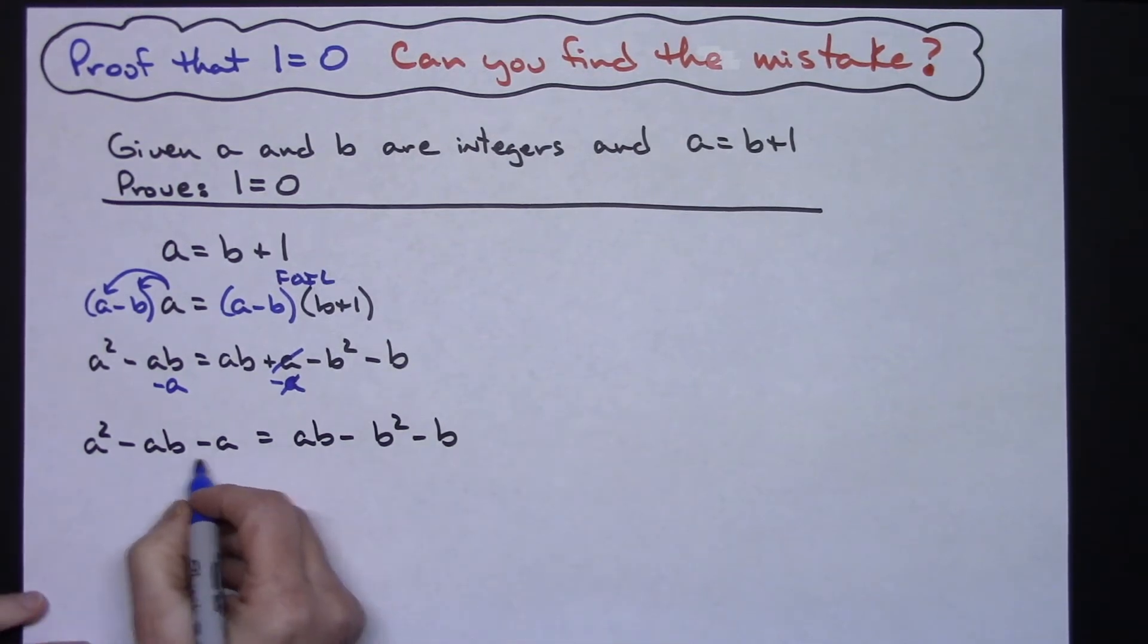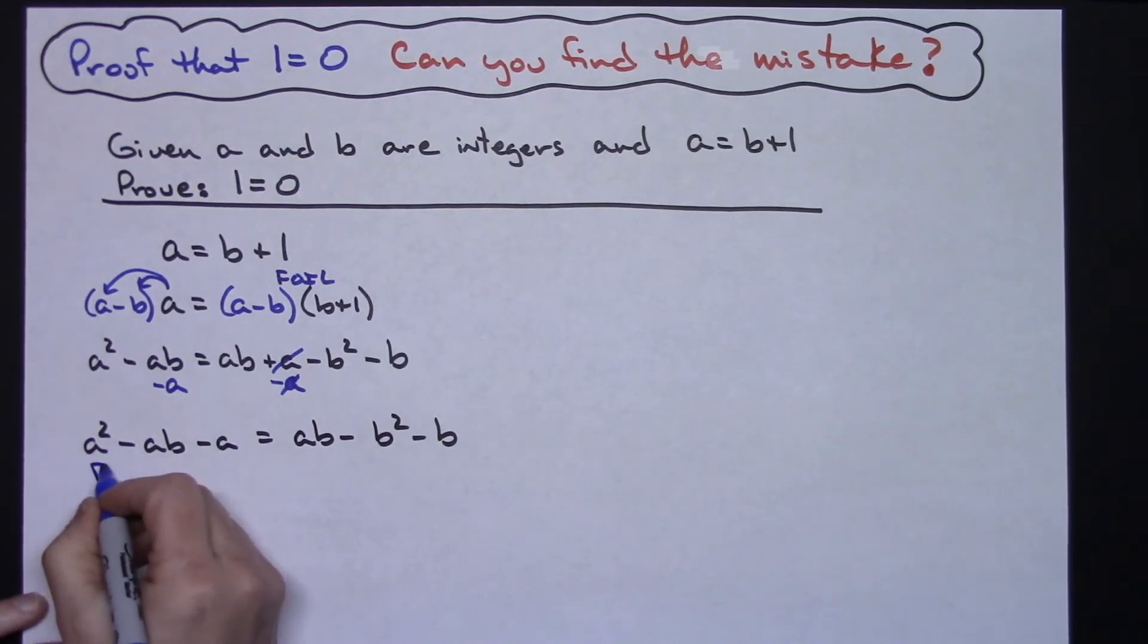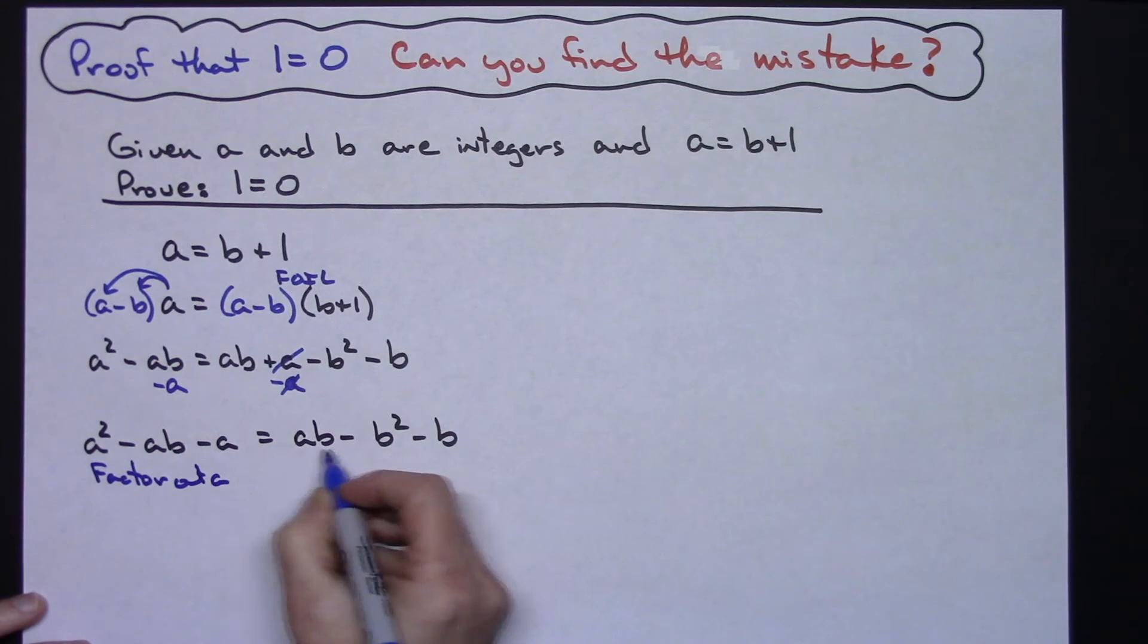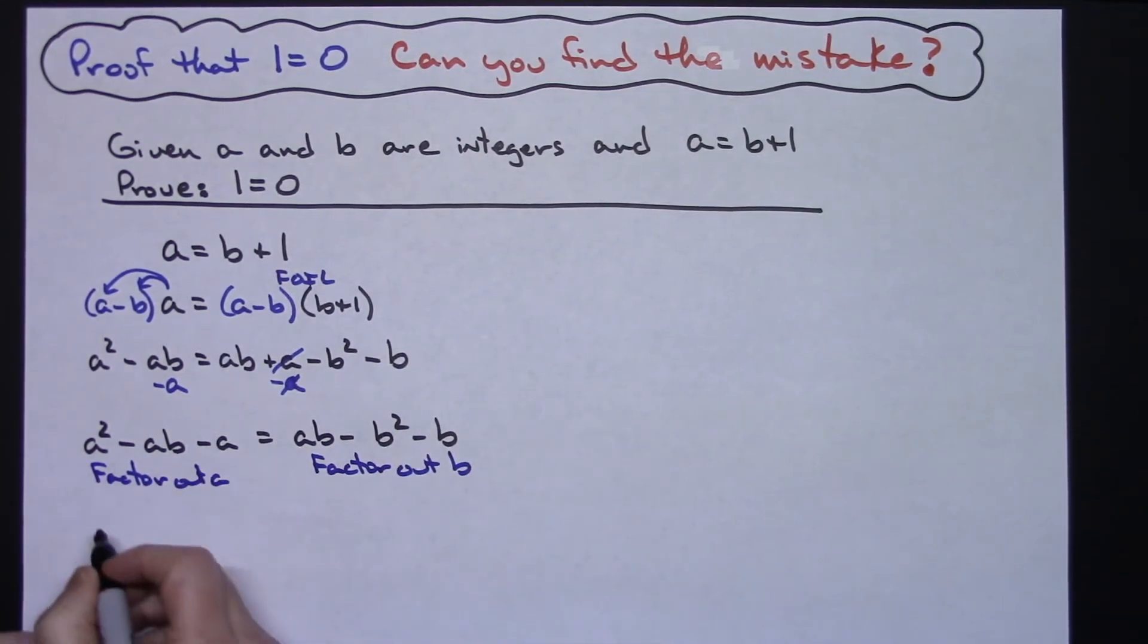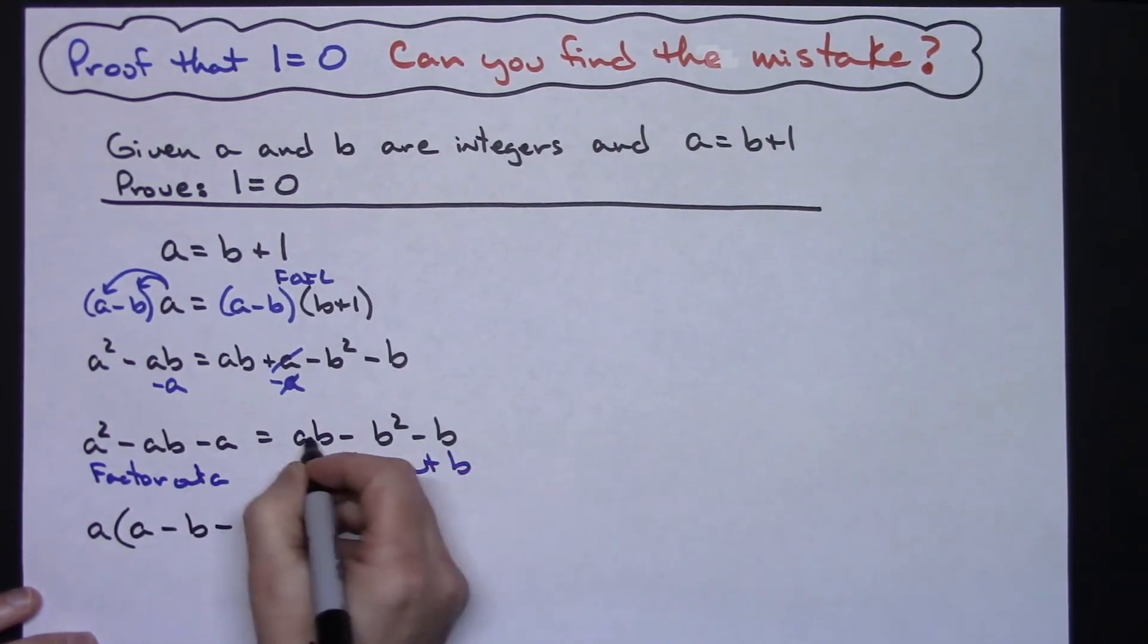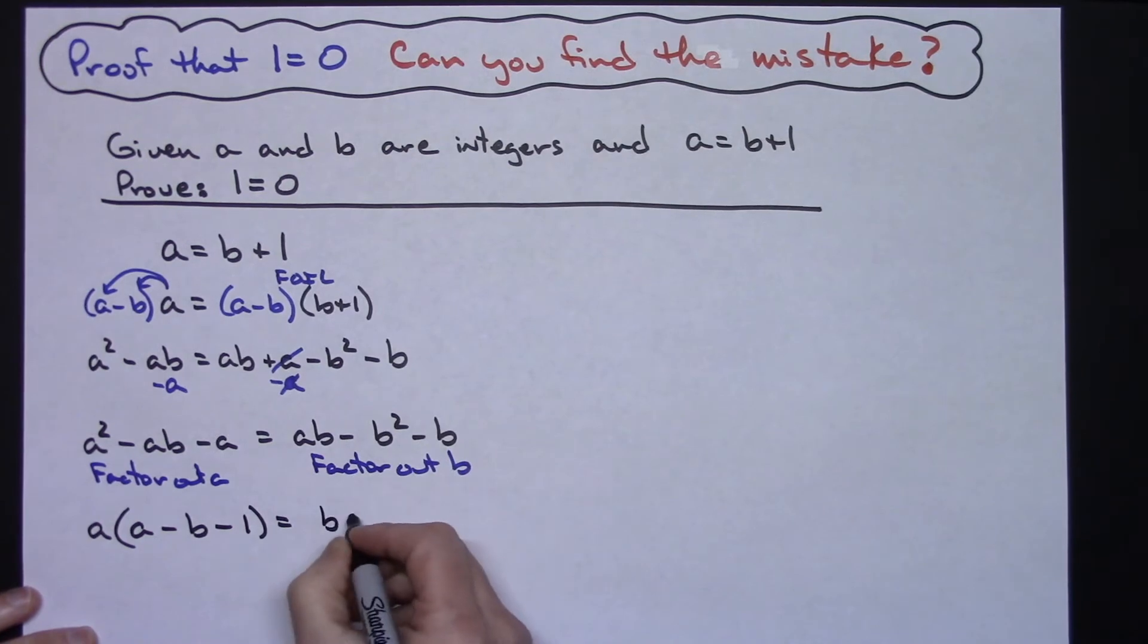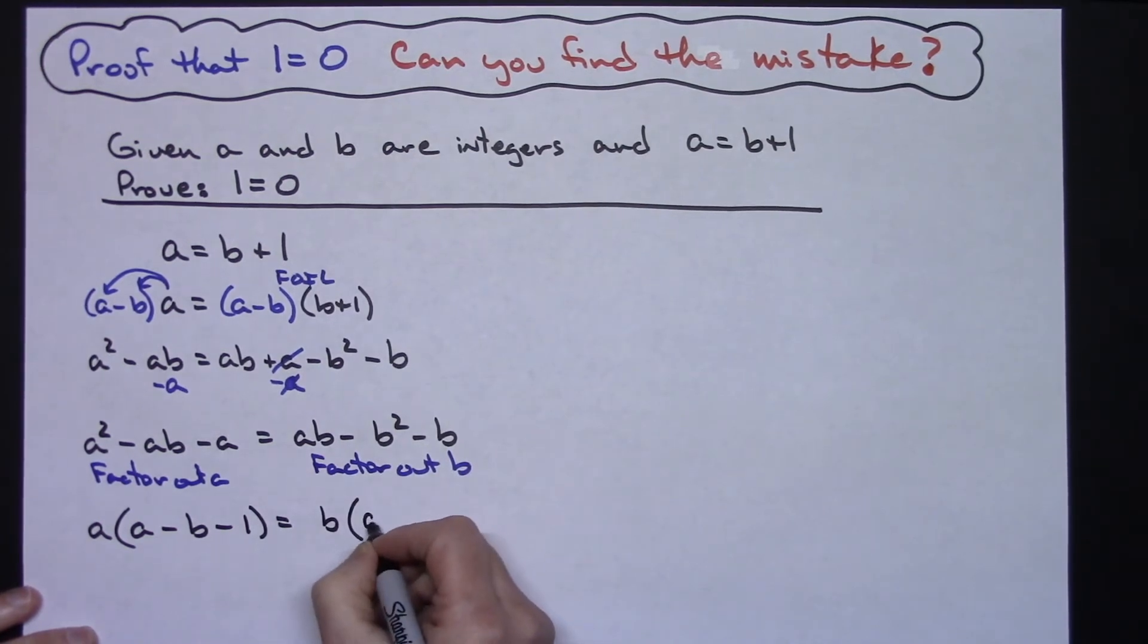Now on this left hand side I have a greatest common factor of a, so I'm going to factor out a here. On this side over here I've got a common factor b, so on the right hand side I'm going to factor out a b. When I factor out an a over here I've got a times a minus b minus 1. Factoring out my b over here, I'm going to be left with b times a minus b minus 1.